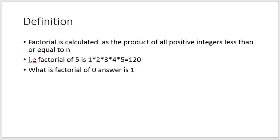Here I took an example: factorial of 5 is 1 into 2 into 3 into 4 into 5, that is equal to 120. Now, what is the factorial of 0? Factorial of 0 is 1.